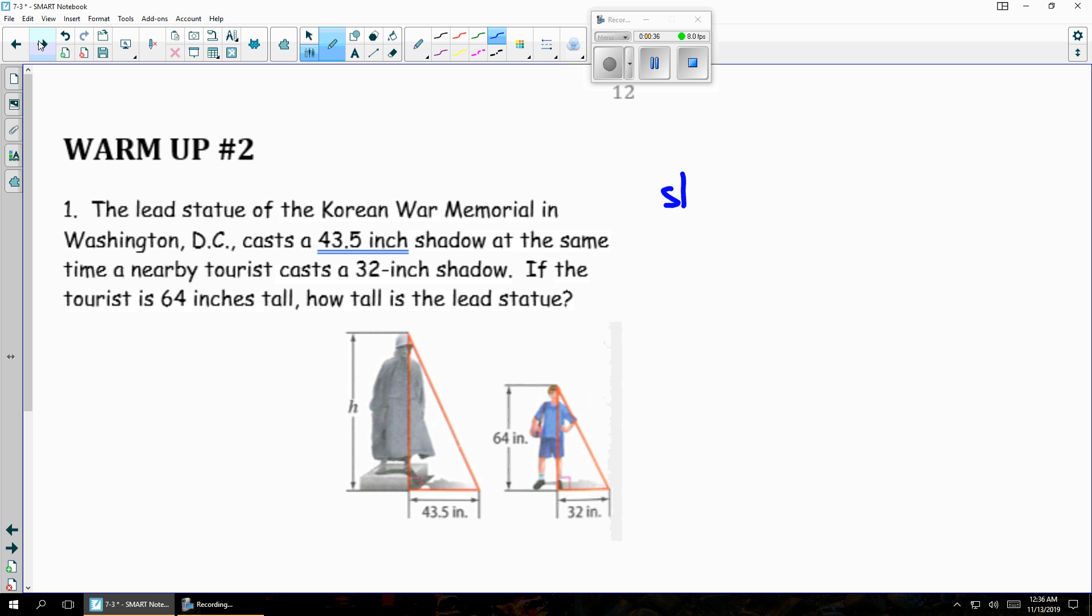The statue at the Korean War Memorial in Washington casts a 43.5 inch shadow. At the same time, a nearby tourist casts a 32 inch shadow. If the tourist is 64 inches tall, how tall is the statue? So we want to know the height over the shadow. Now the question is, how tall is the statue? That means this is what I don't know. That's my X.